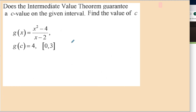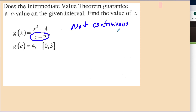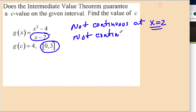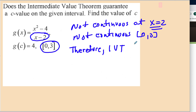Does the Intermediate Value Theorem guarantee a c value for this next function? We have a rational expression, which is not continuous — specifically, it's not continuous at x = 2. This is absolutely important because we are looking at the interval from 0 to 3, and x = 2 lies within that interval. Therefore, f of x is not continuous on 0 to 3, and the Intermediate Value Theorem does not apply. We cannot guarantee anything.